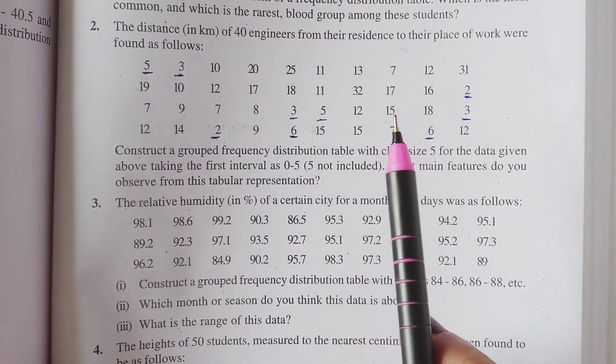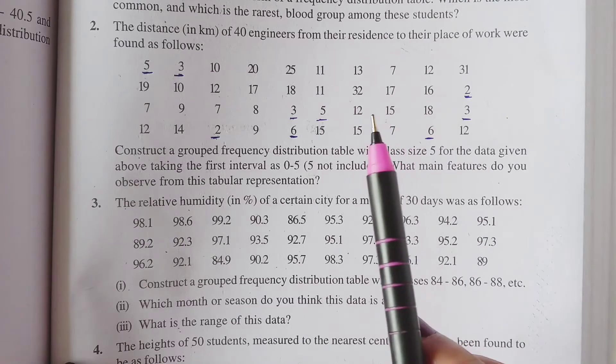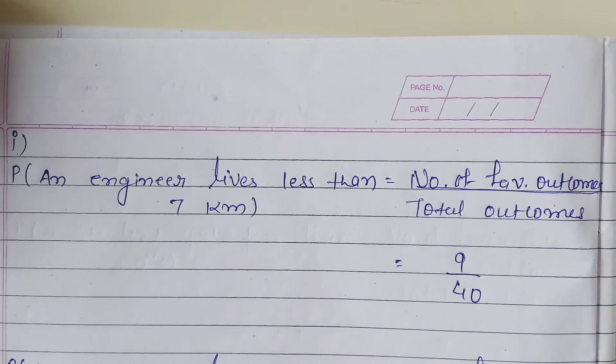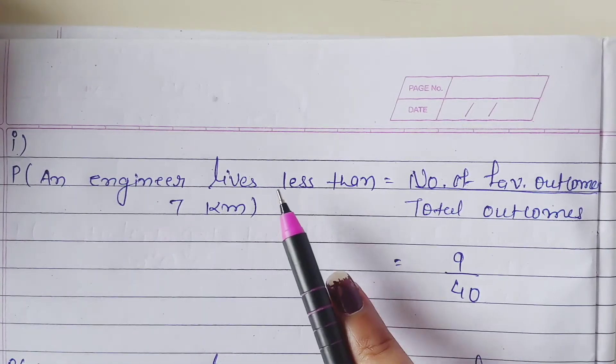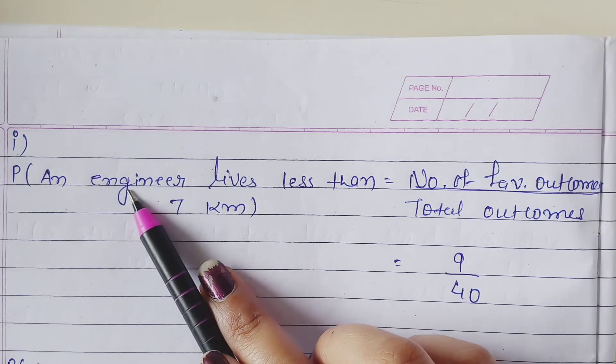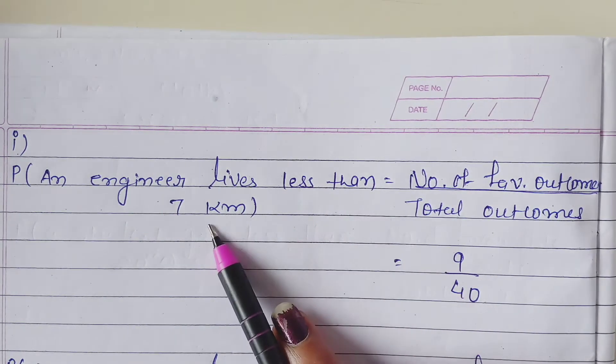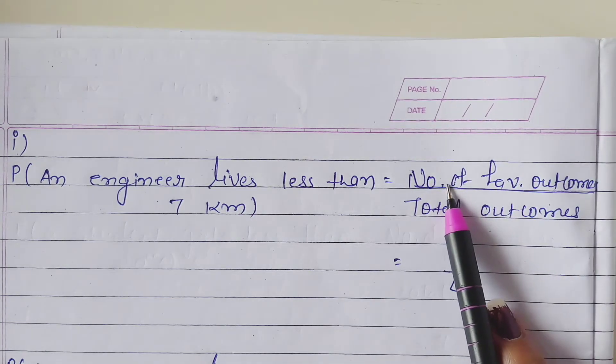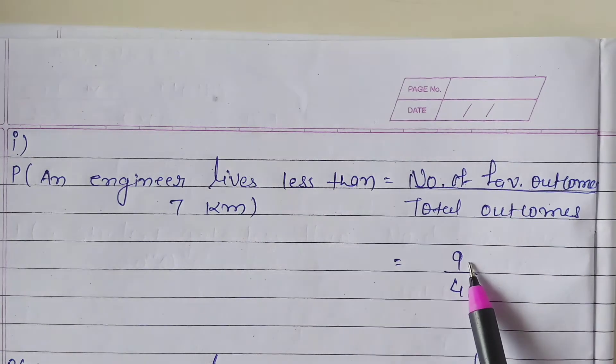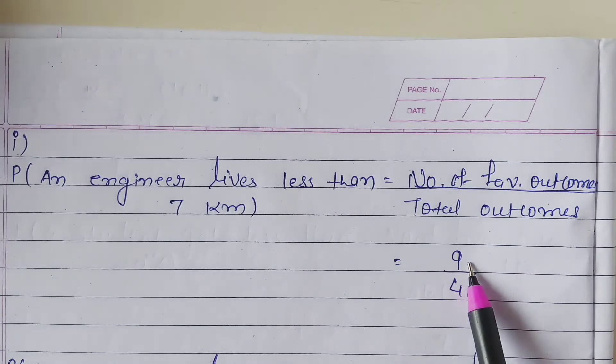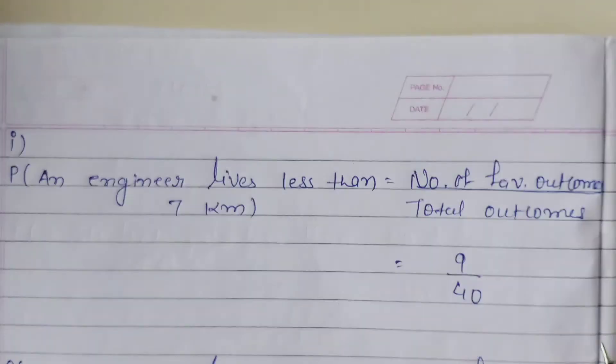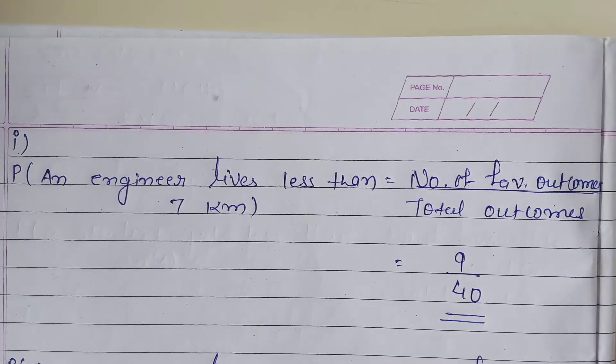Yeh sari 7 km se less than hai, so wiese kitnay engineers count karenge? 1, 2, 3, 4, 5, 6, 7, 8 and 9. So 9 engineers hai jiska work place ka jo distance hai, woh 7 km se kam hai. Probability of an engineer lives less than 7 km, woh humme find karna hai. Uska formula aega, number of favorable outcomes upon total outcomes. Favorable outcomes hai 9 and total number of engineers hai 40.